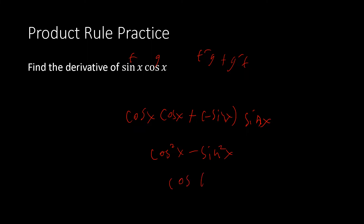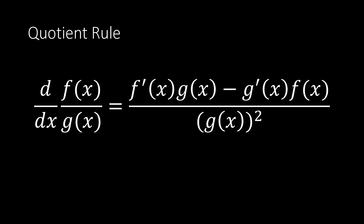That's it for the product rule — let's move into the quotient rule. This is bigger and harder to memorize, but we'll take it step by step. The derivative of f(x)/g(x) is [f'(x)·g(x) − g'(x)·f(x)] / [g(x)]². The shorthand notation is: (f'g − g'f) / g².